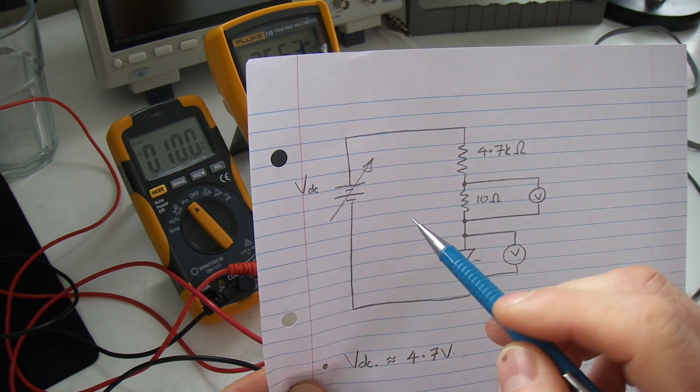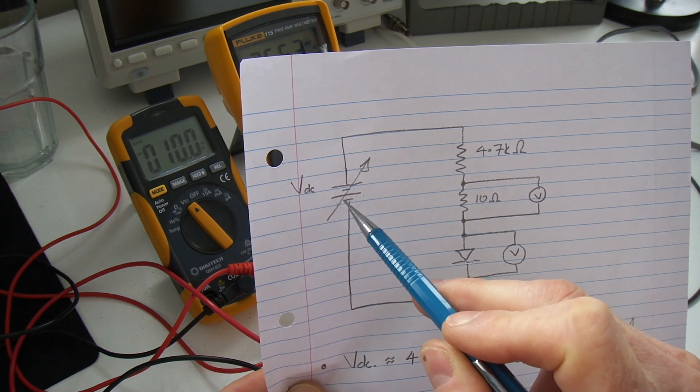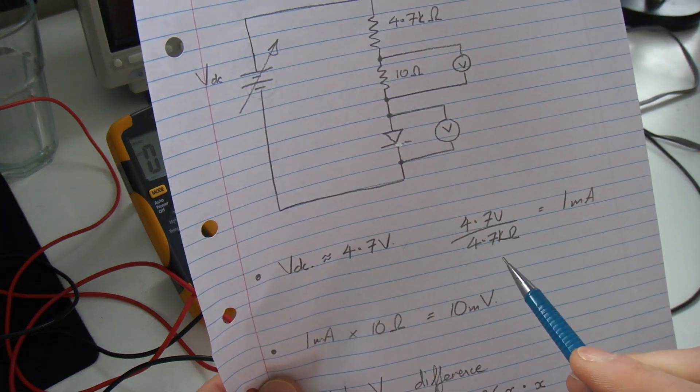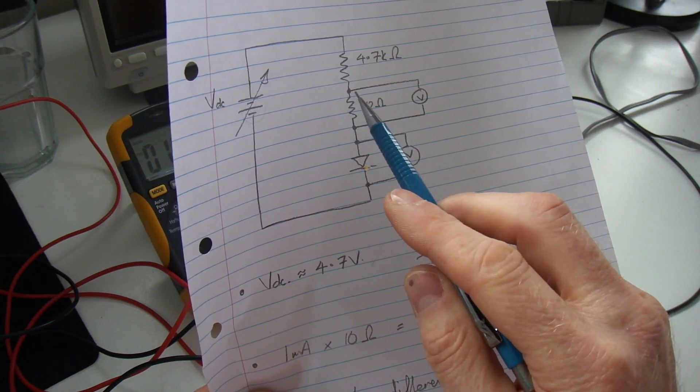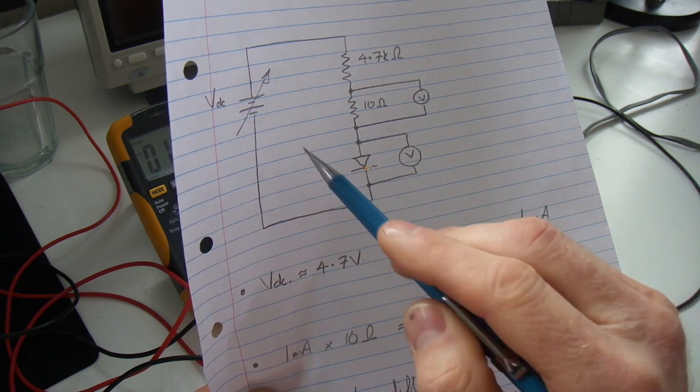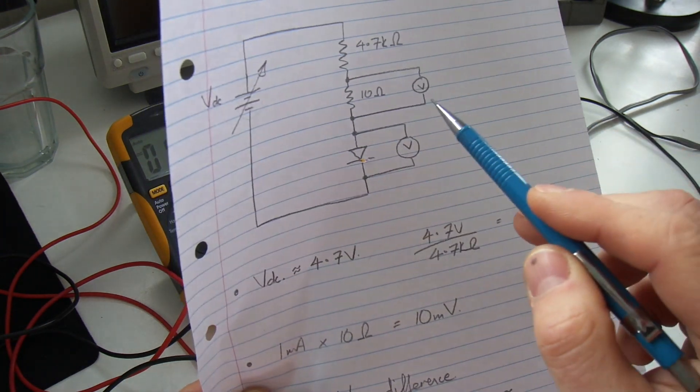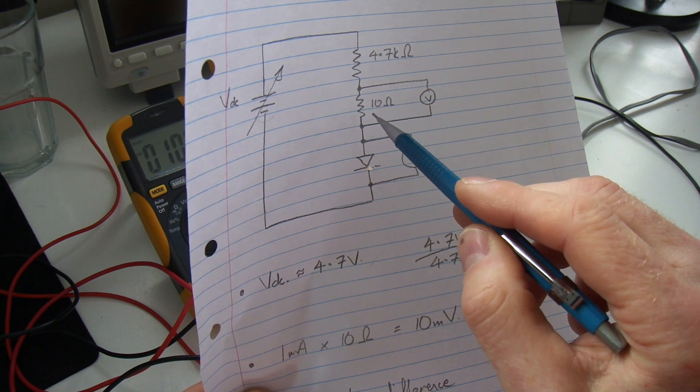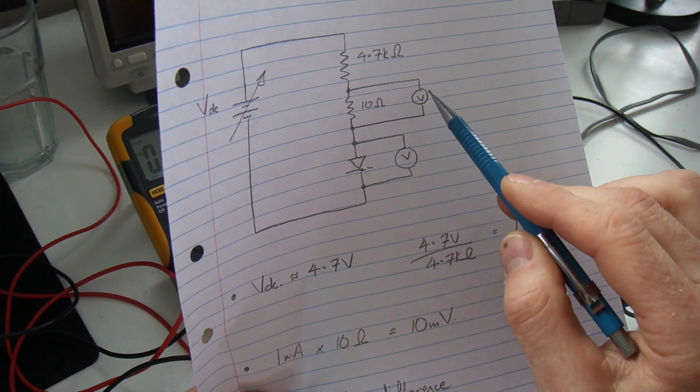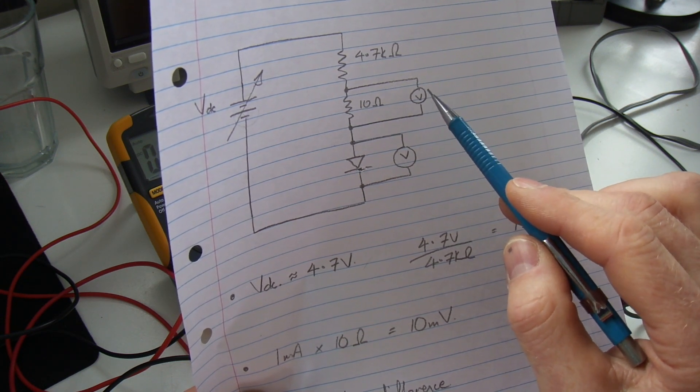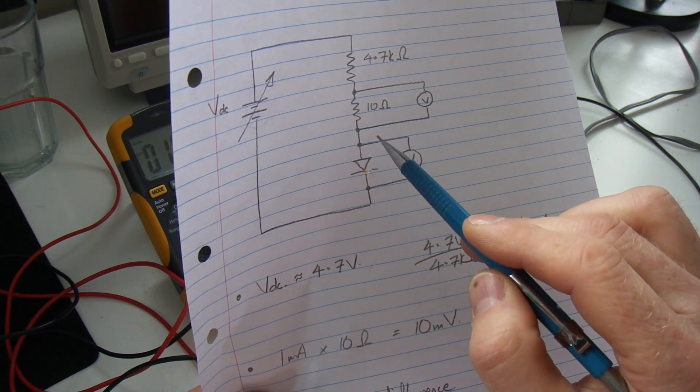In terms of the circuit itself, very simple: just using a variable DC power supply passing through a 4.7k ohm resistor, so approximately 4.7 volts divided by 4.7k ohms comes out to one milliamp. I've got an additional 10 ohms there which I'm measuring the voltage across to work out the current - one milliamp times 10 ohms equals 10 millivolts, so that's what I'll be measuring on this meter. I measure current through a circuit by putting in a low value resistor to avoid blowing fuses in my meters.